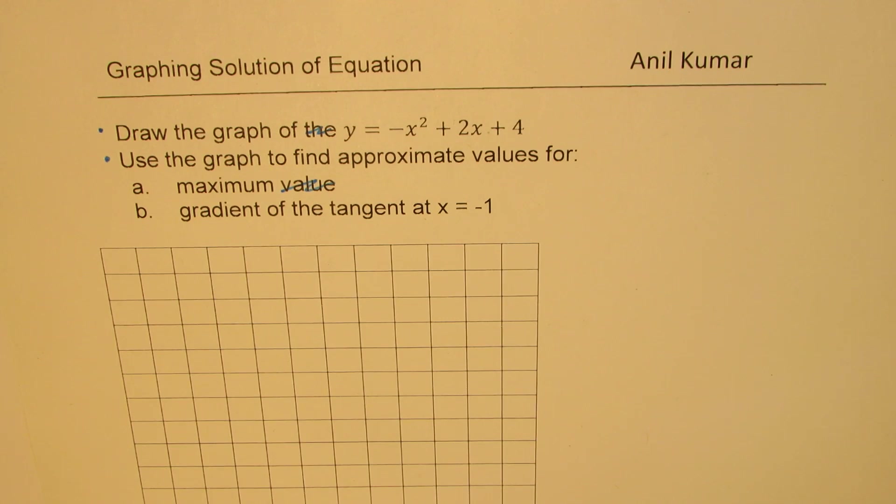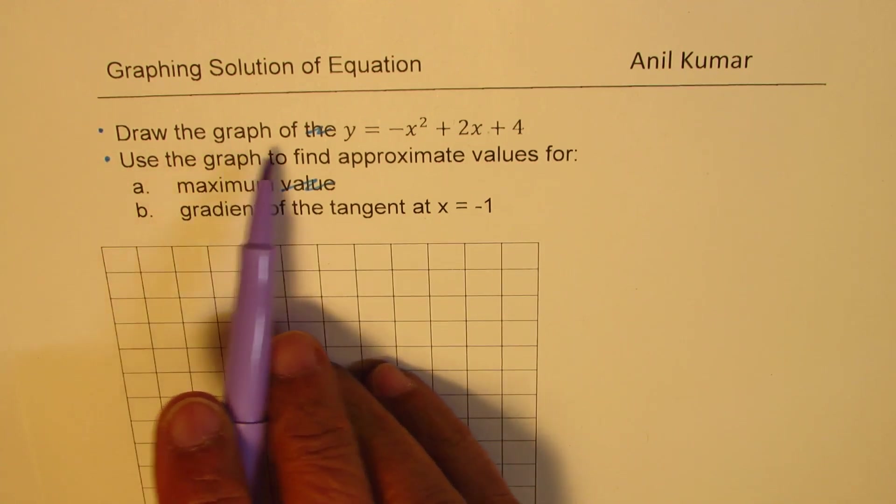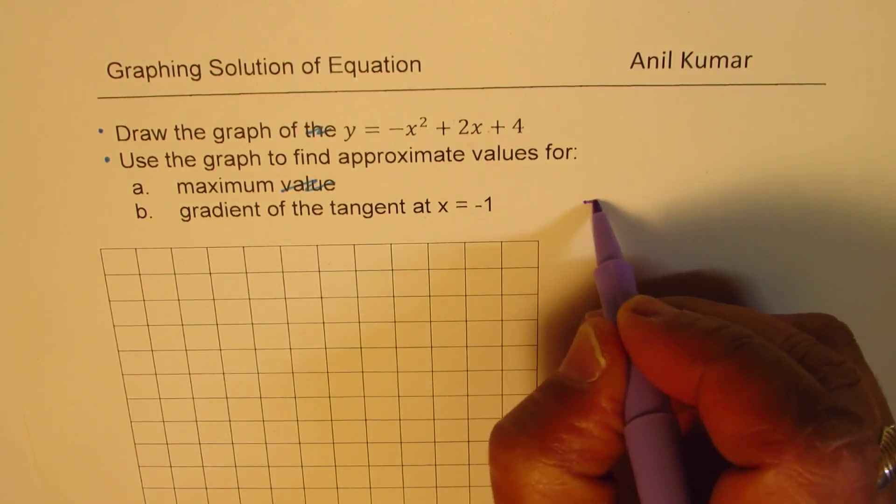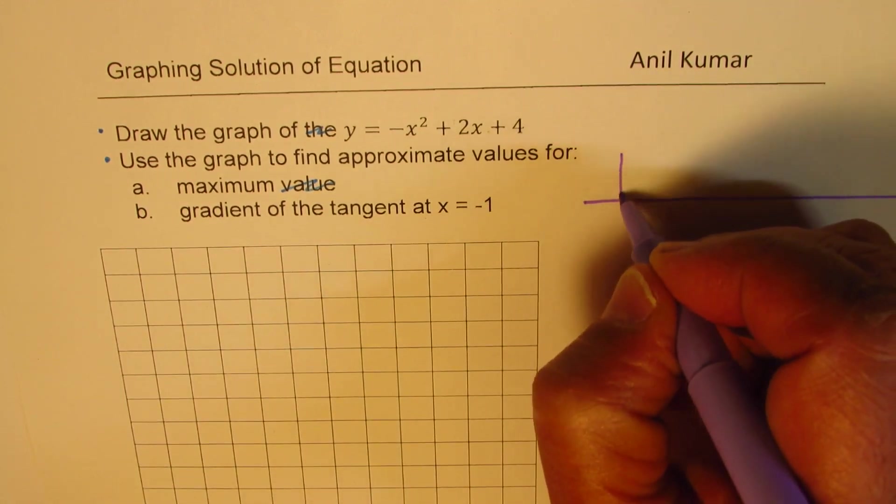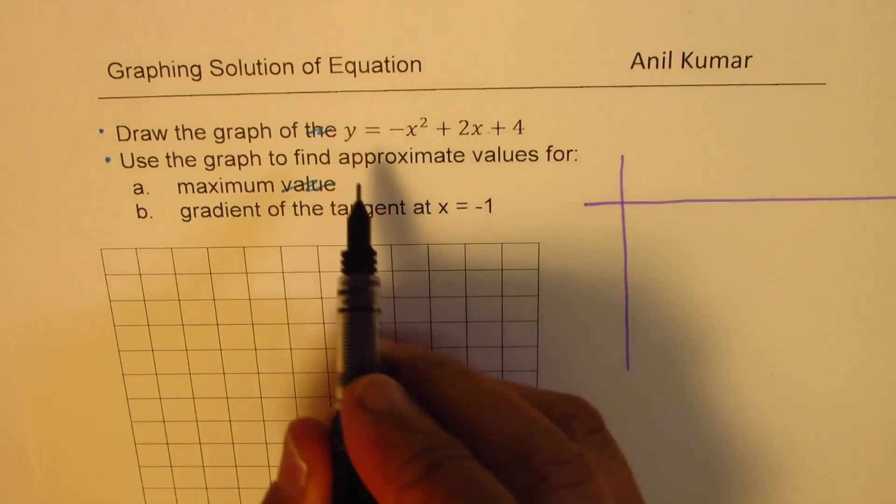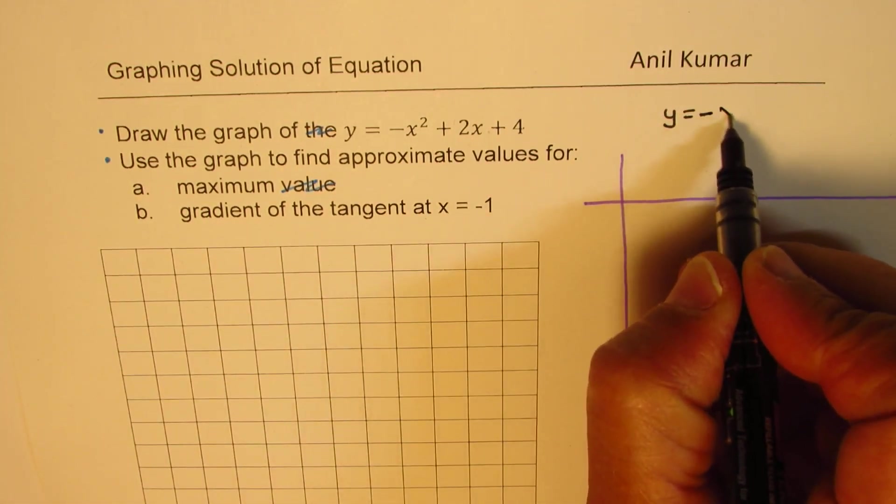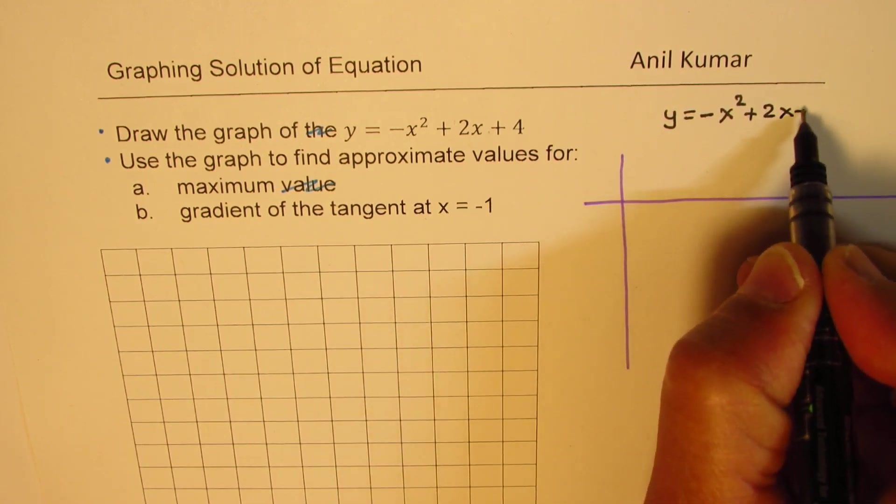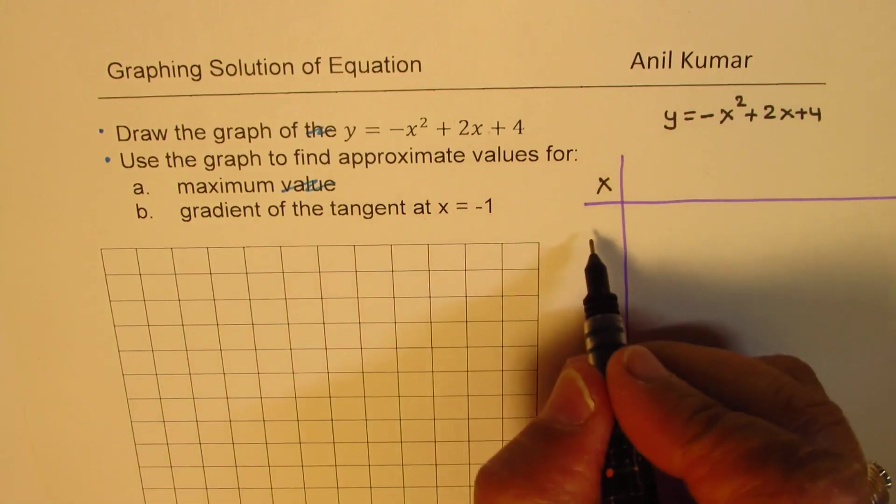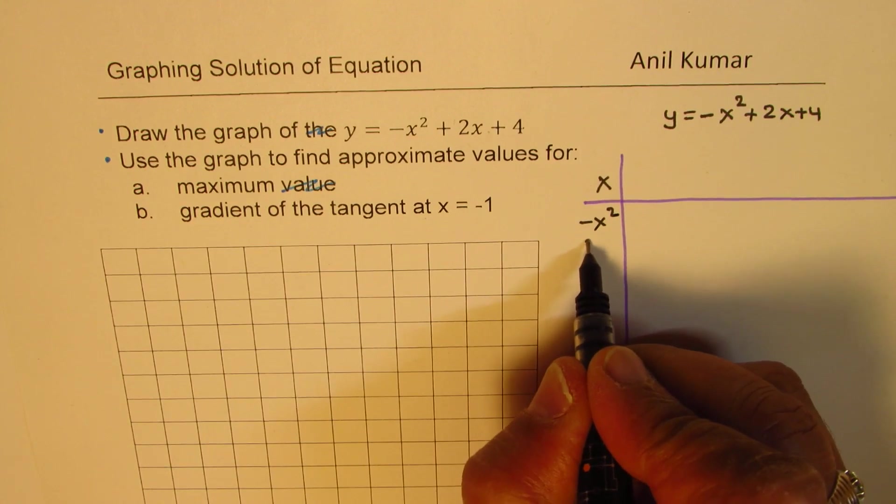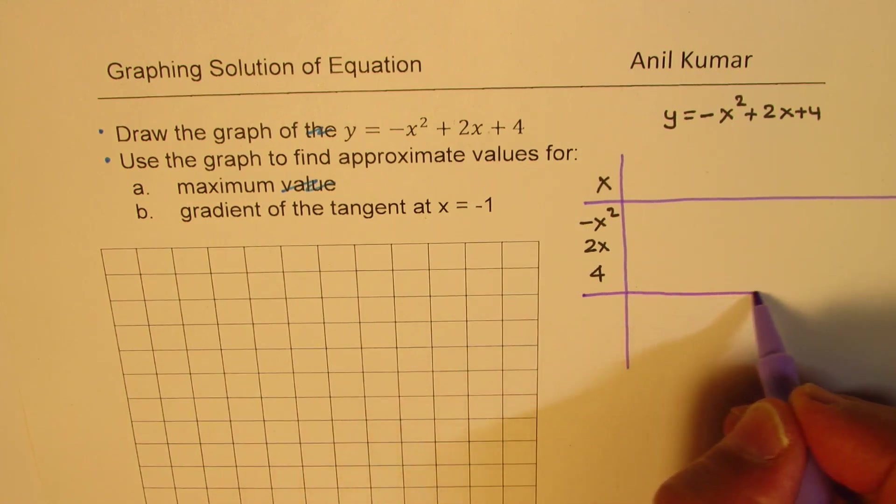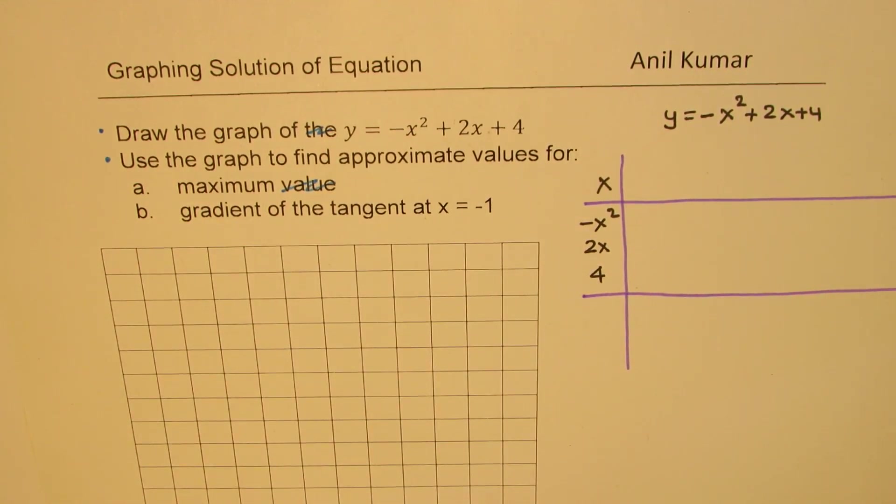Now, let us see how to draw the graph. When it is draw the graph, you have to find a few points, at least 5. To find the coordinates of the points, we'll calculate the y values for different values of x. The equation is y equals minus x squared plus 2x plus 4. We'll take some values of x and calculate what is minus x squared, what is 2x, add 4 to it, and once we do all that, we'll get the y values.